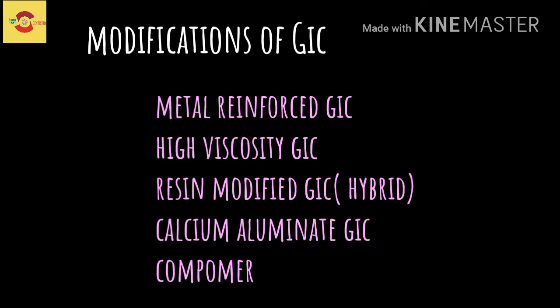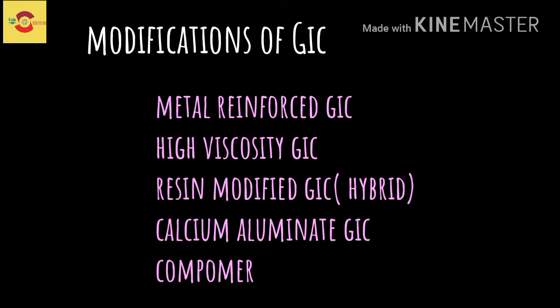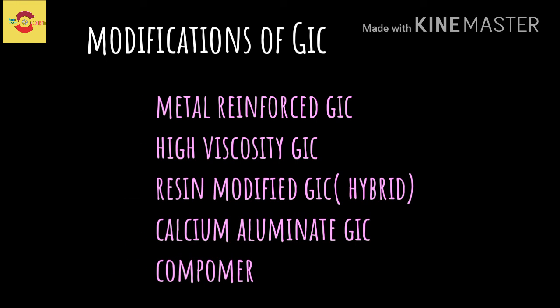To combat these disadvantages, certain modifications have been developed, including metal-reinforced glass ionomer cements, high-viscosity glass ionomer cements, resin-modified GICs (also known as hybrid ionomers), calcium aluminate glass ionomer cements, and compomers. These modifications will be discussed in another video.